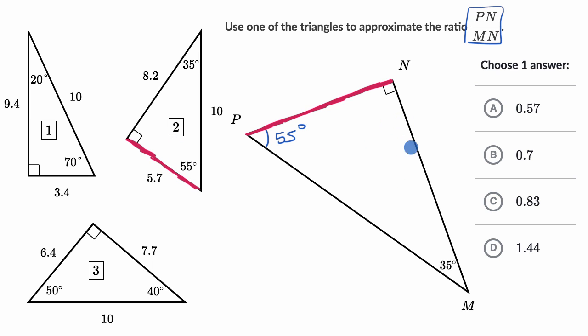And then MN, that's this that I'm coloring in this bluish color. That's opposite the 55 degree angle. And so opposite the 55 degree angle would be right over there.